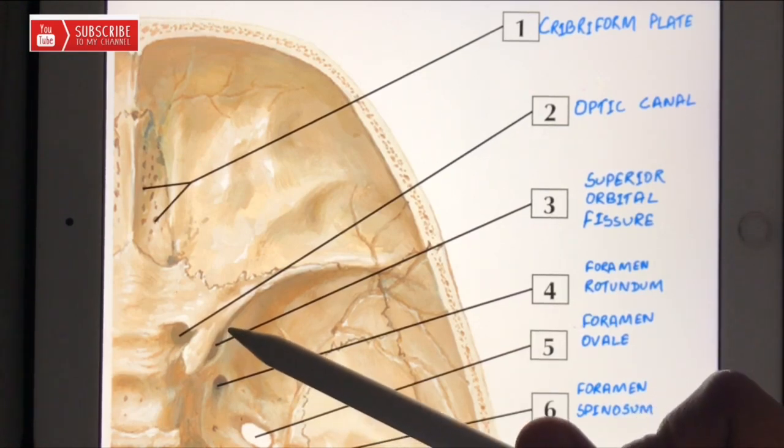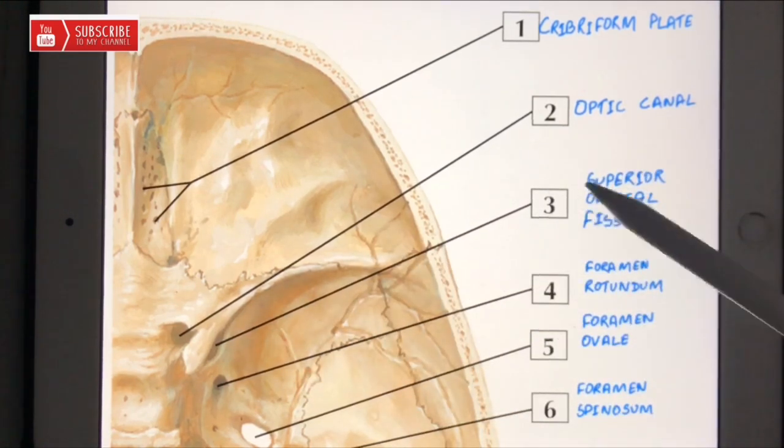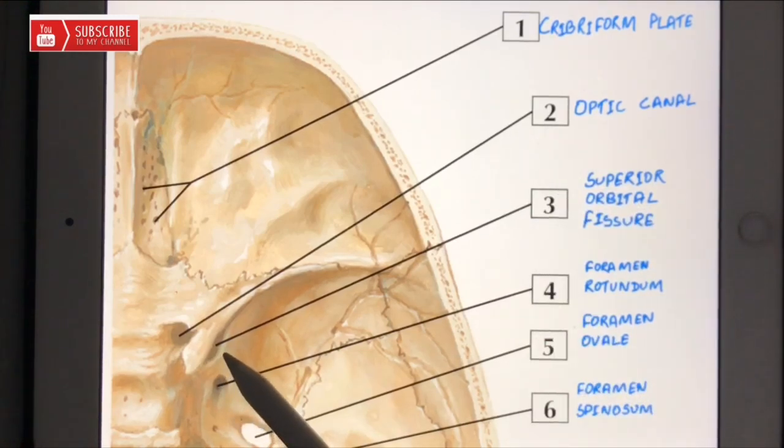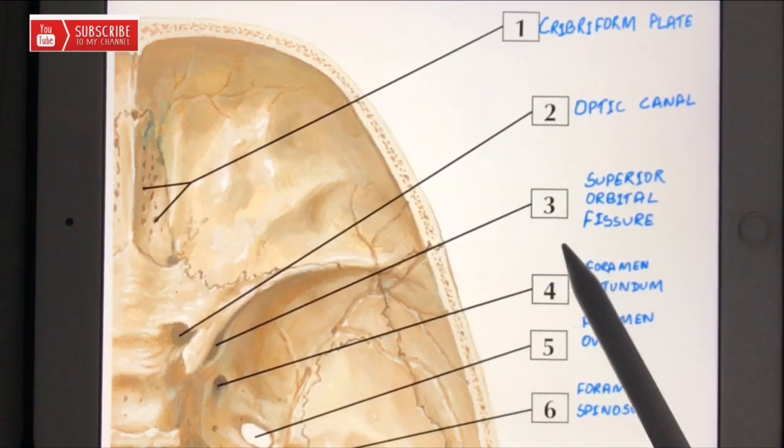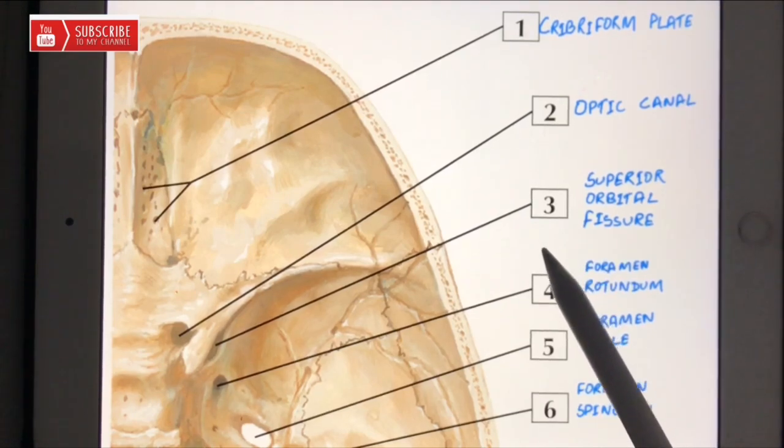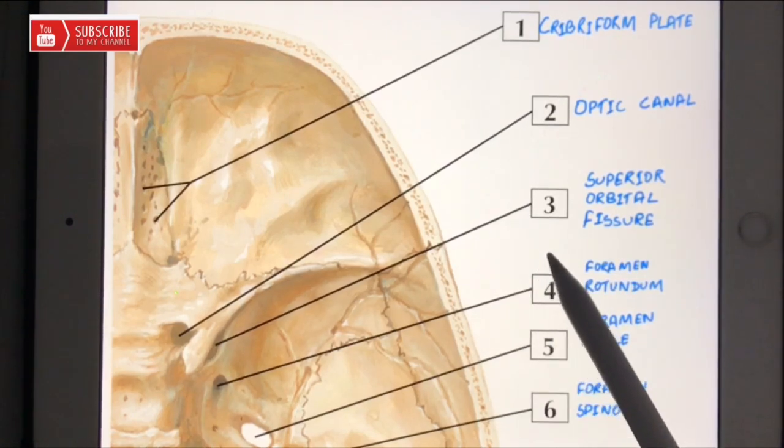Number three is the superior orbital fissure. Through the superior orbital fissure many structures pass, and these are the third cranial nerve, which is the oculomotor nerve.